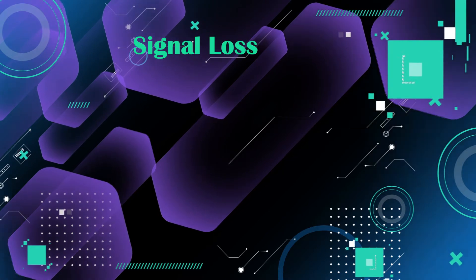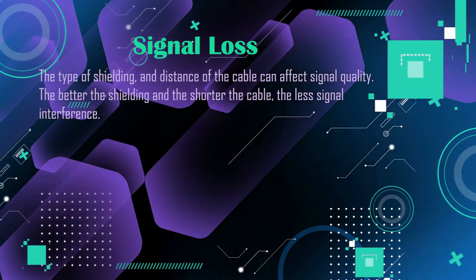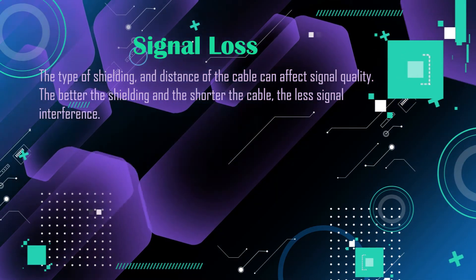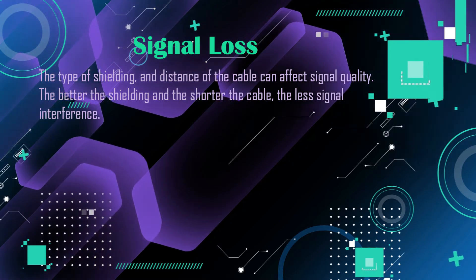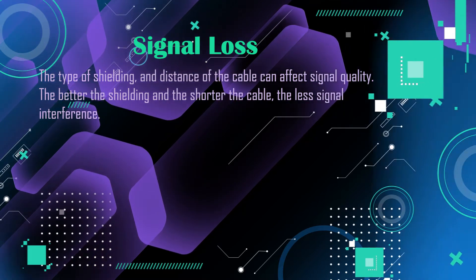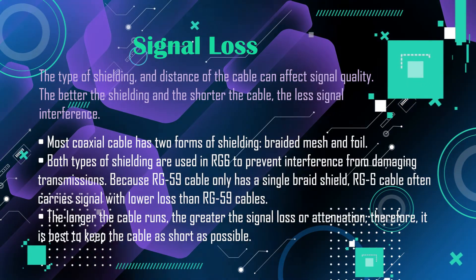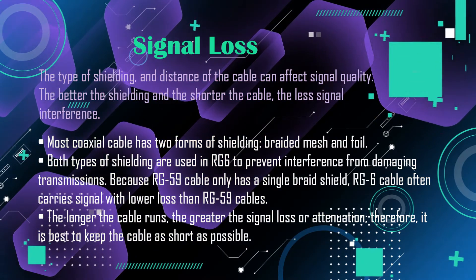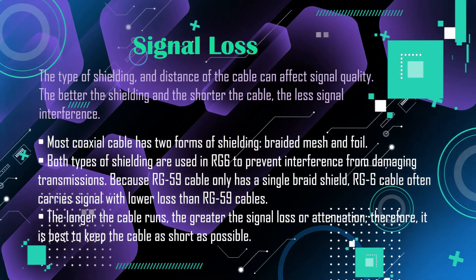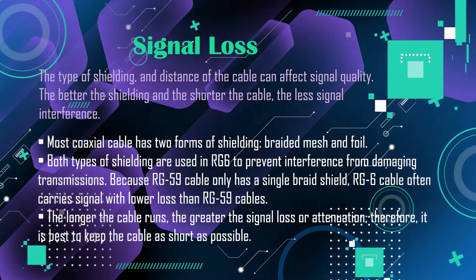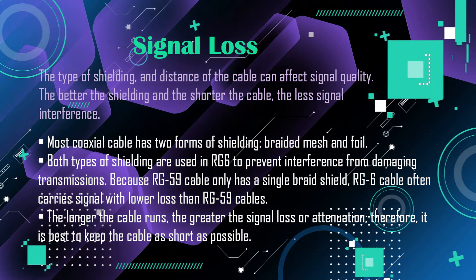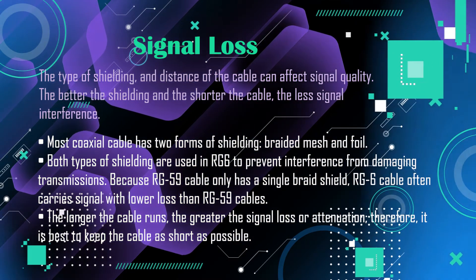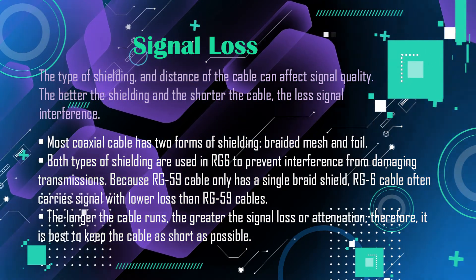Signal loss: the type of shielding and distance of the cable can affect signal quality. The better the shielding and the shorter the cable, the less signal interference. Most coaxial cable has two forms of shielding — braided mesh and foil. Both types of shielding are used in RG6 to prevent interference from damaging transmissions.